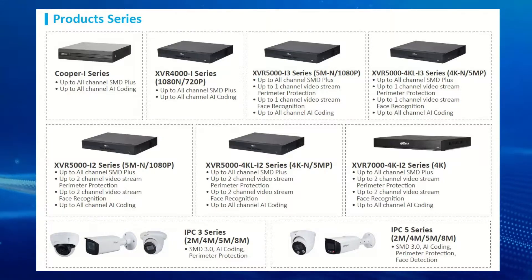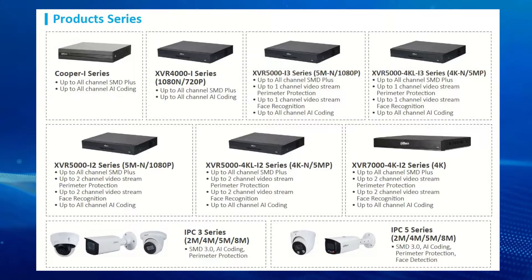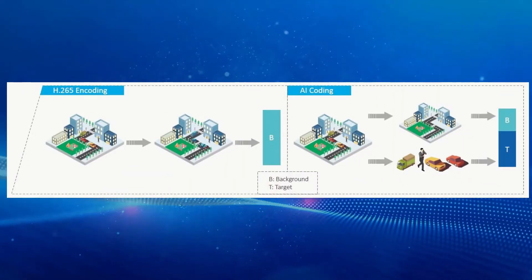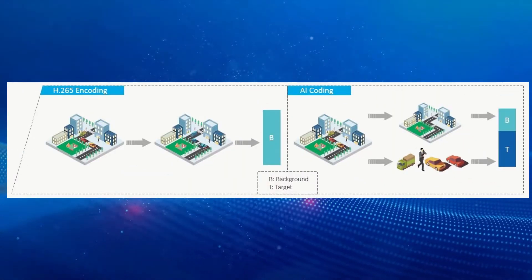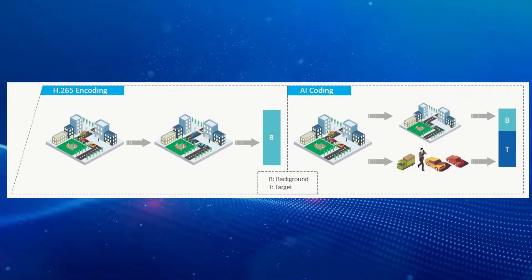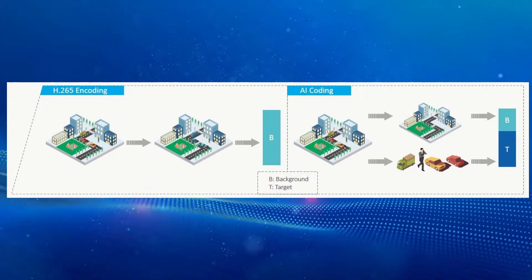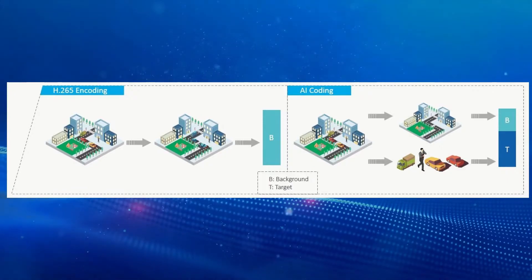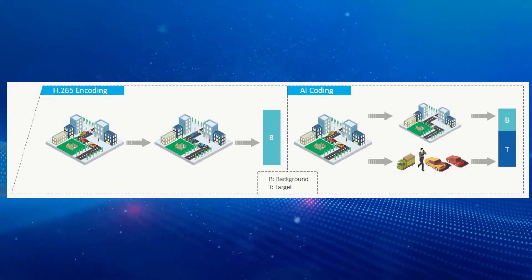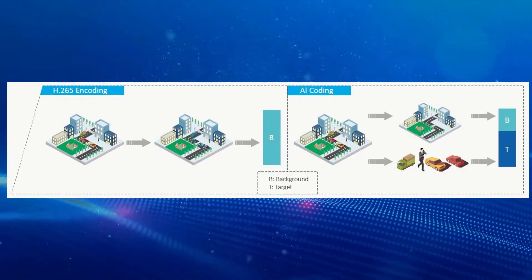What AI coding does is look at the object and figure out if it's a human or a vehicle. If it is a human or vehicle, it's going to give it a bit more detail and better picture quality for that object.